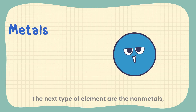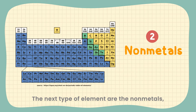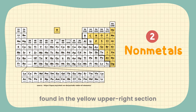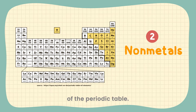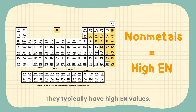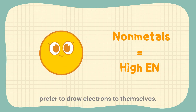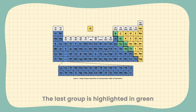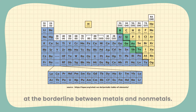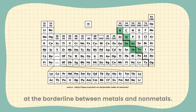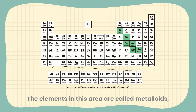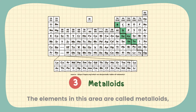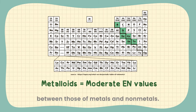The next type of elements are the non-metals, found in the yellow upper right section of the periodic table. They typically have high EN values, meaning these elements prefer to draw electrons to themselves. The last group is highlighted in green as the borderline between metals and non-metals. The elements in this area are called metalloids, and they have EN values between those of metals and non-metals.